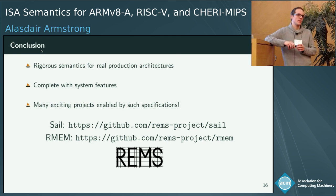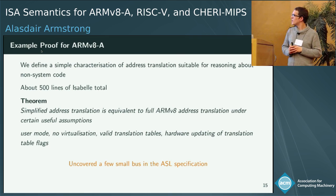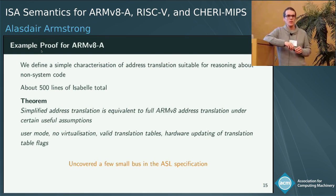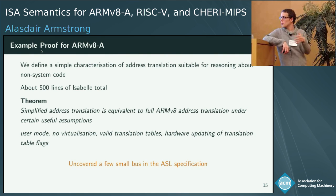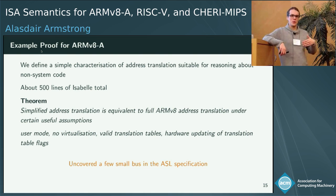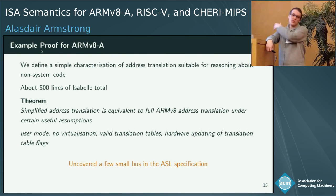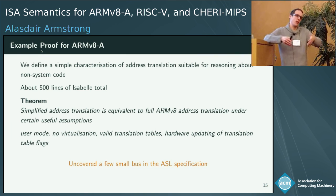Philippa asks about the address translation theorem: what can you prove with the simpler characterization, and what requires the full specification? The idea is that for certain applications you don't want to deal with the full complexity. If you want to do something with ordinary user-mode code — not writing a hypervisor — you don't need to deal with the full complexity of address translation on every memory access. Under sensible assumptions, the simple characterization is equivalent, so you can just use that instead when doing proofs in Isabelle.